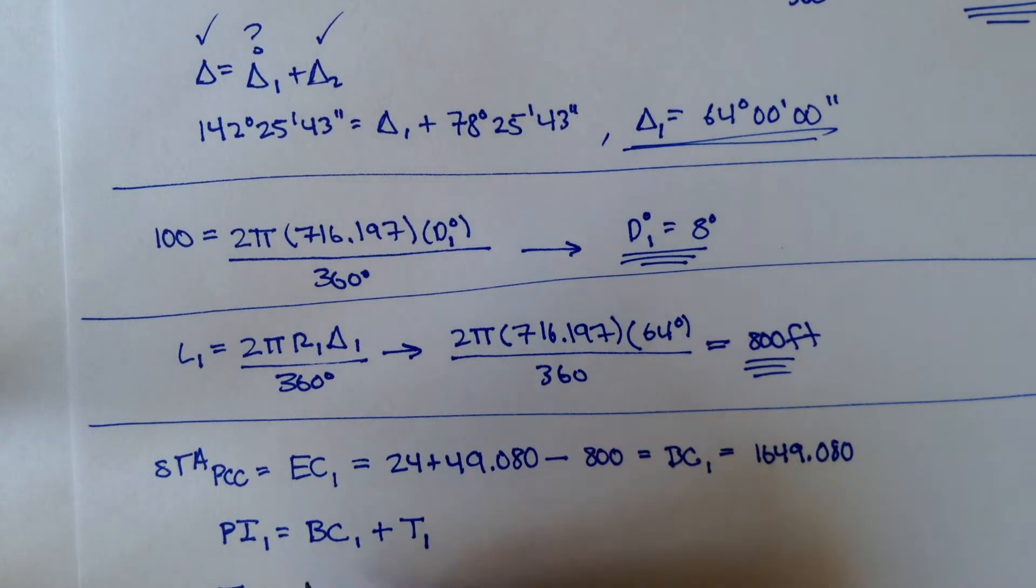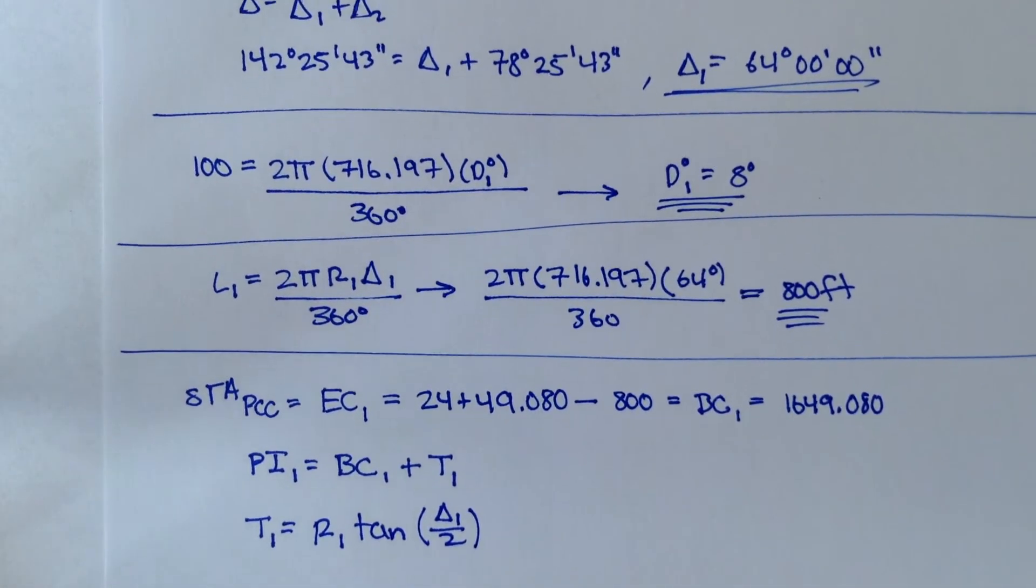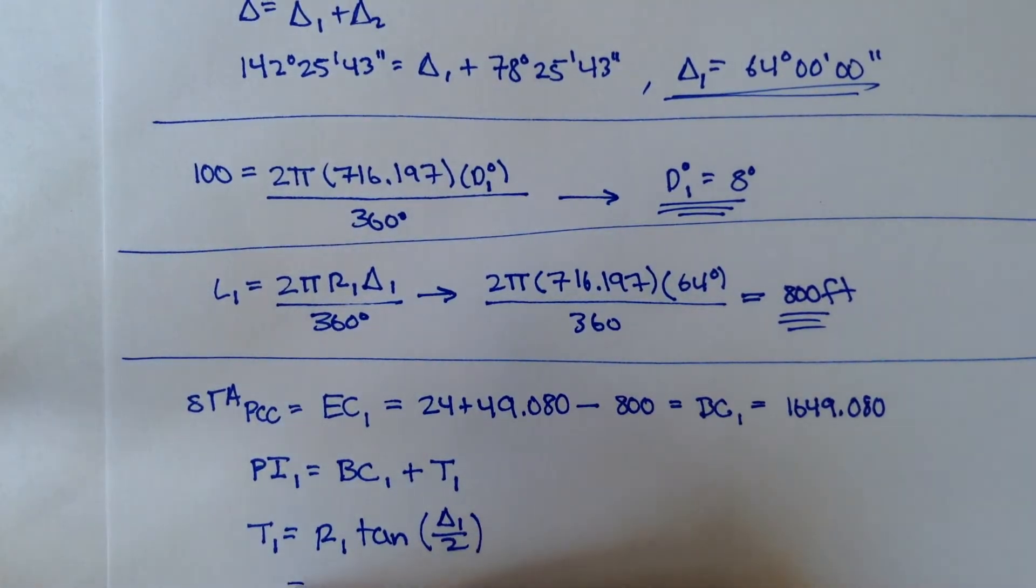Tangent 1 is equal to R1 tan delta 1 over 2. Remember, this is a formula we derived a little while back. We know what radius 1 is.